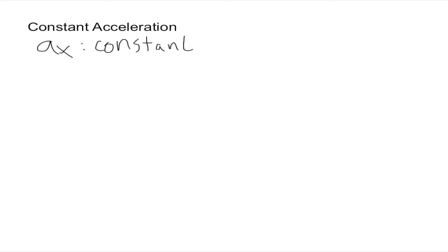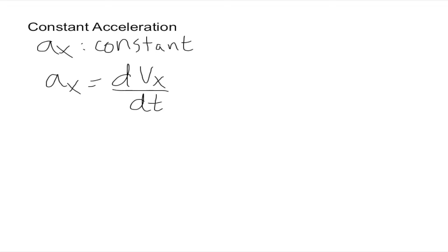For this to work, we have to first consider acceleration as constant. We know that ax is going to be constant. We also know that from finding the derivative of velocity, we can find acceleration, which means ax is equal to dvx over dt. However, in this case we have acceleration but not velocity, so we want to find that velocity. Because acceleration is the derivative of velocity, that means velocity is the integral of acceleration. So finding the integral of acceleration is going to give us our velocity vx.